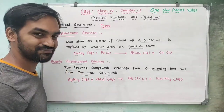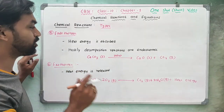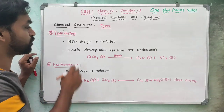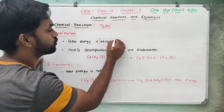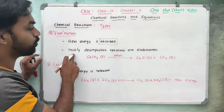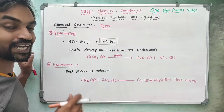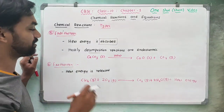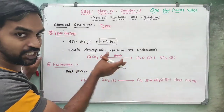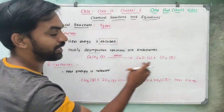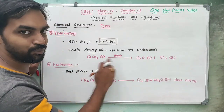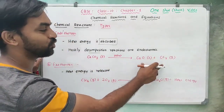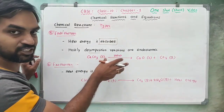Endothermic reaction: heat energy is absorbed. Mostly decomposition reactions are endothermic — thermal decomposition. For example, calcium carbonate absorbs heat to give calcium oxide and carbon dioxide. So the reactant absorbs heat — that is an endothermic reaction.